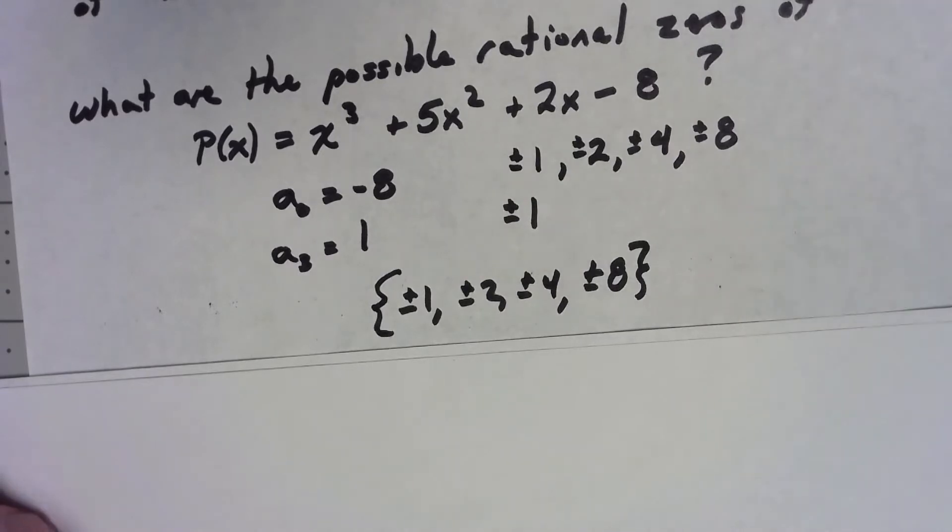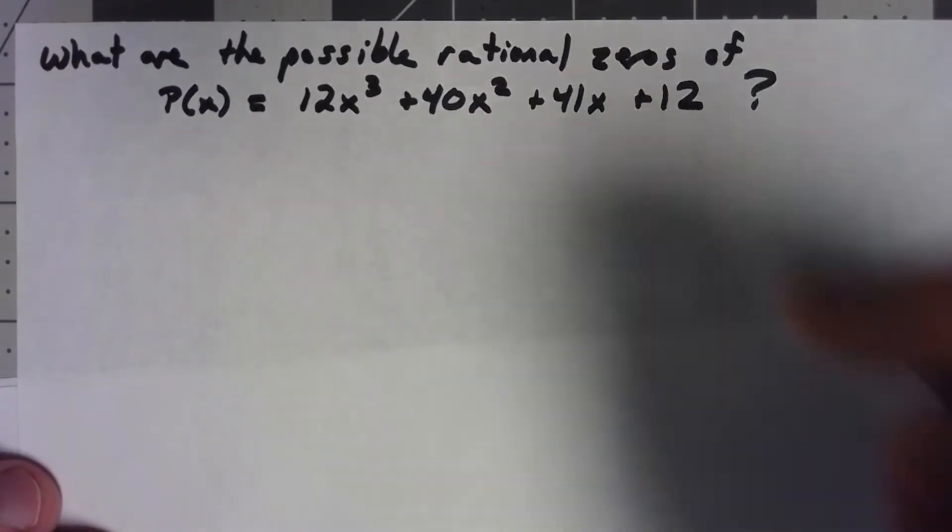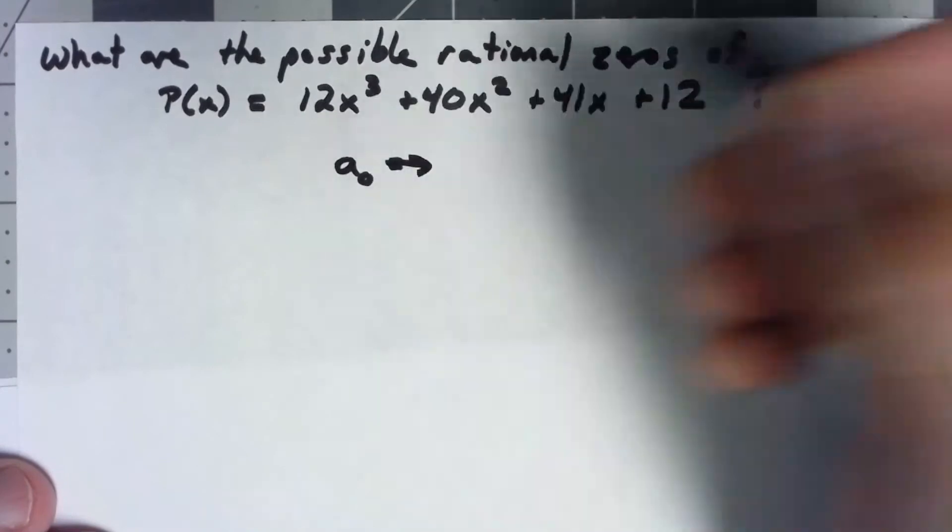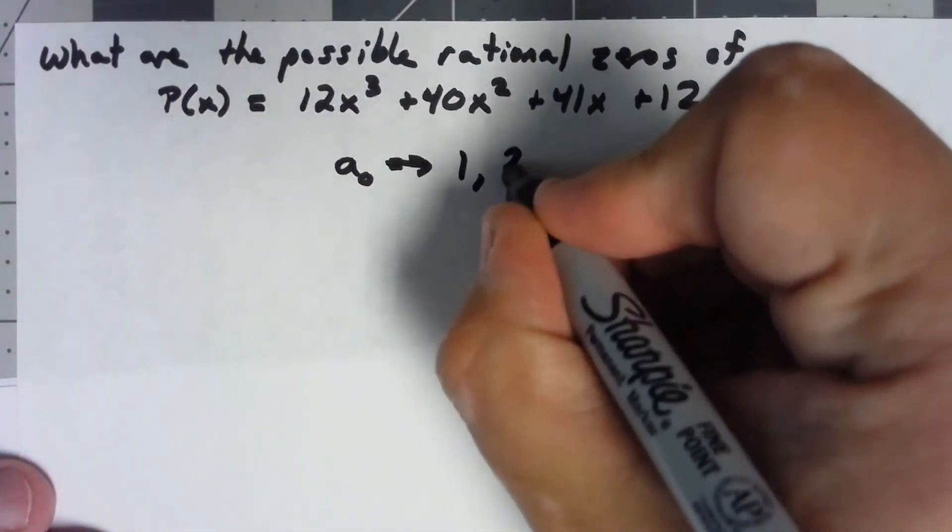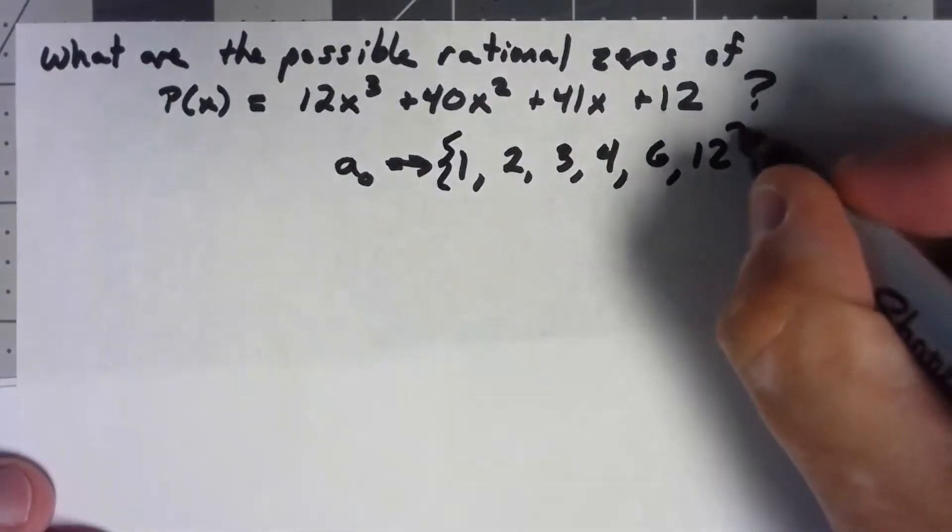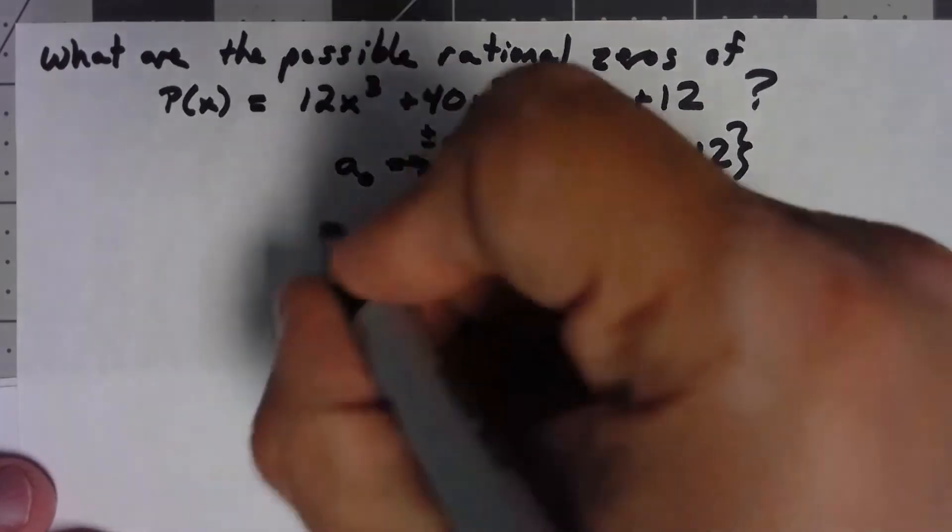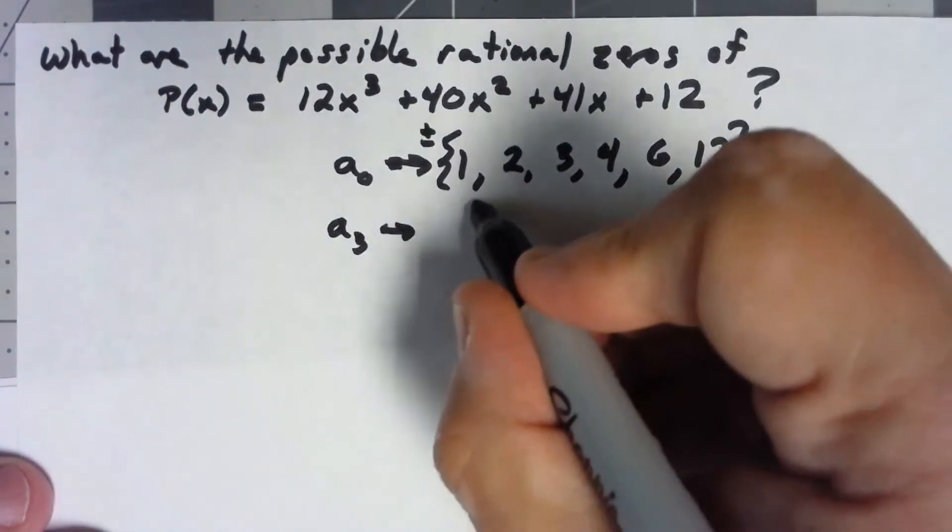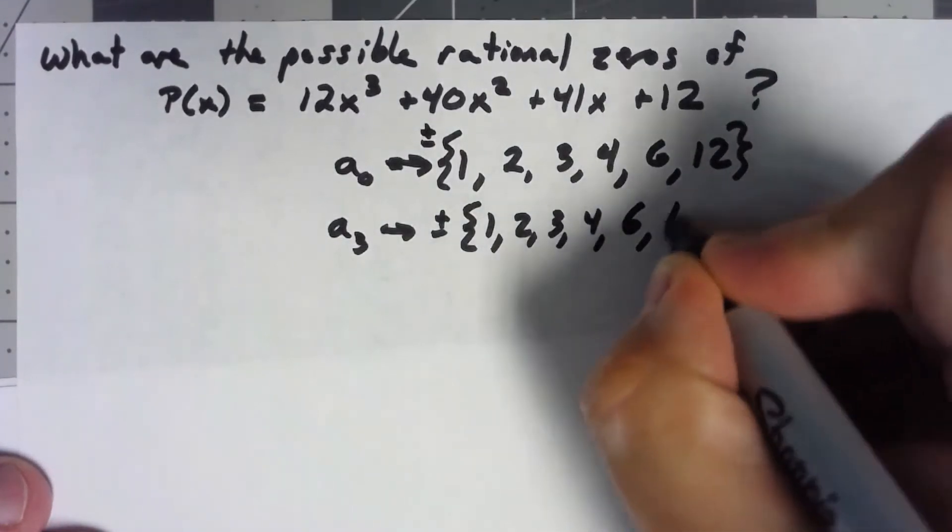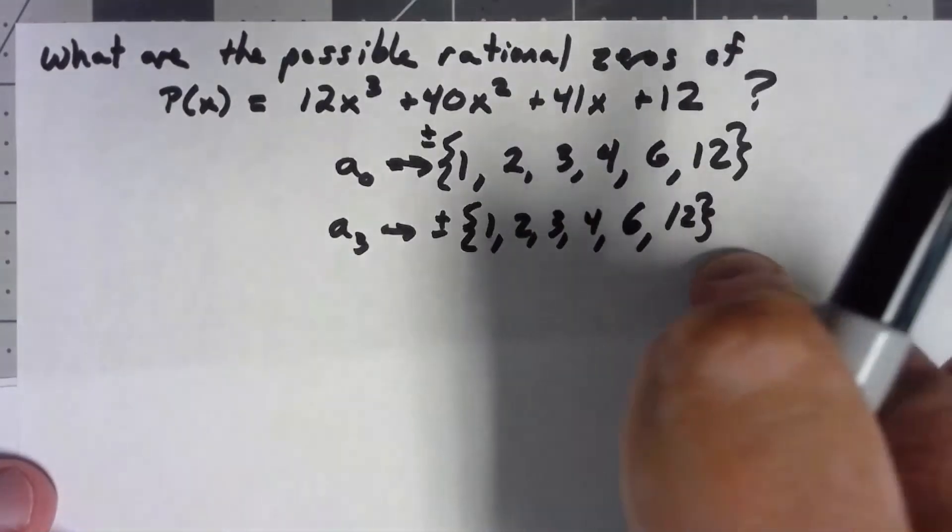Let's take a look at a little bit more complicated example. What are the possible rational zeros of this one? Well here my constant, the factors are the factors of 12 which are 1, 2, 3, 4, 6, and 12. And I'm just going to put a plus or minus outside the whole thing instead of putting a plus or minus on each one individually. My leading coefficient is also a 12 so it's the same exact set. So what are the possible rational zeros? It's any one of these numbers divided by any one of these numbers.